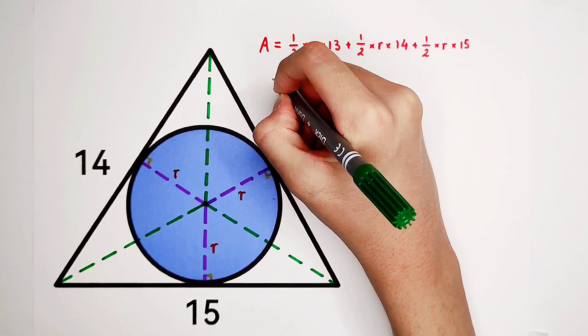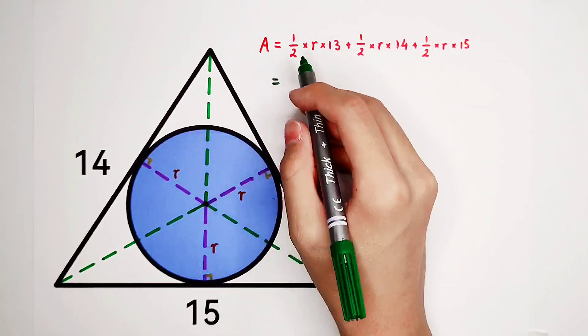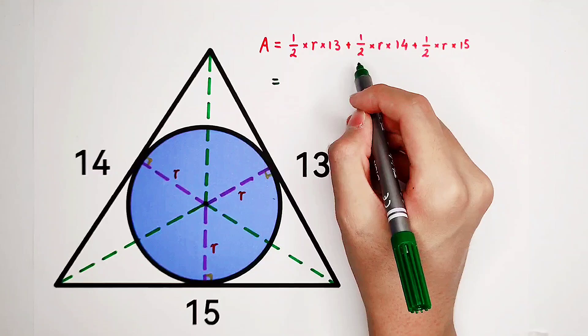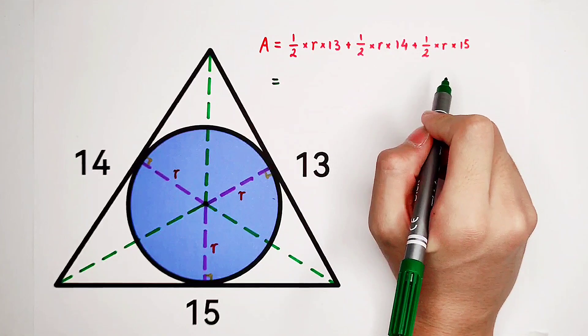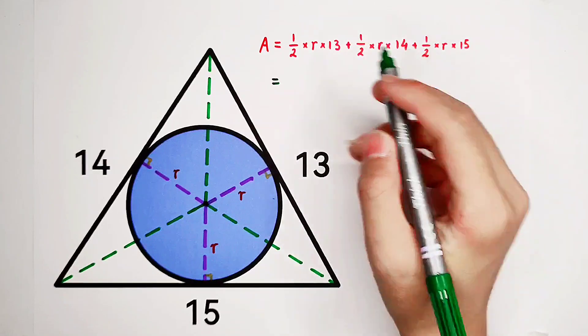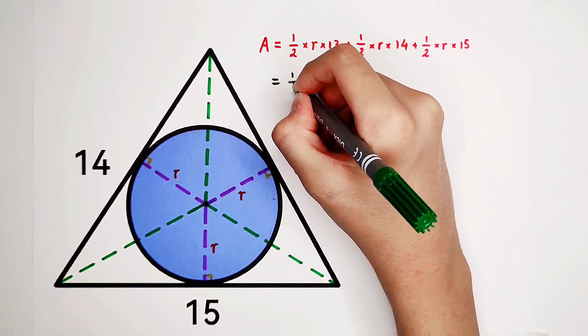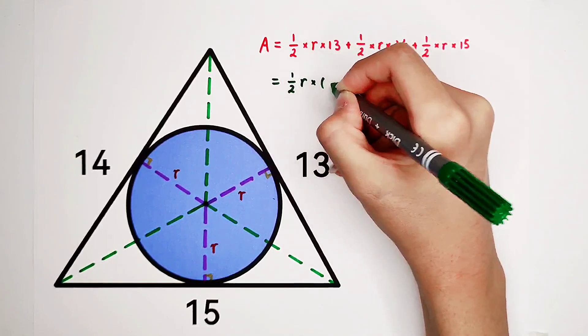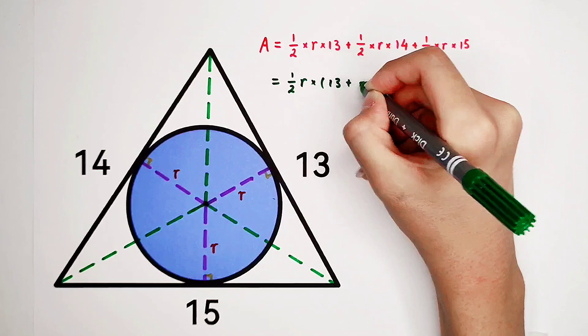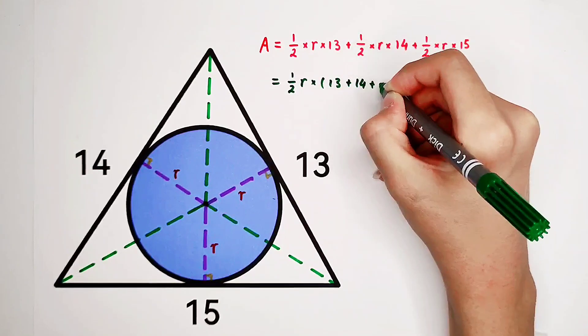Now simplify, please. 1 over 2 times R times 13, 1 over 2 times R times 14, 1 over 2 times R times 15. Common factor, 1 over 2 times R. Then in the bracket, the sum of 13 and 14 and 15.